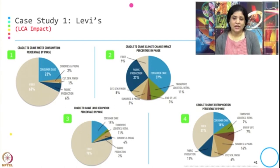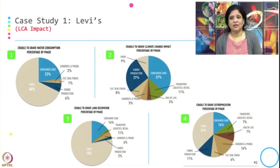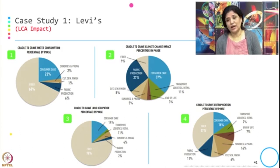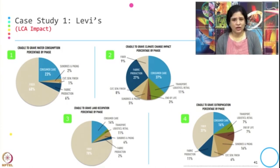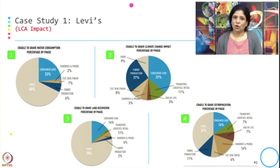Notably, sundries and packaging also create an eutrophication impact of 16% — a component not visible in the previous three impact categories. Overall, if you look at all four impact categories, the contribution coming from fiber and consumer care is almost leading in all cases.